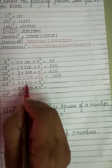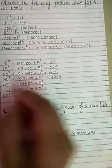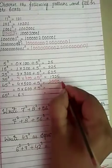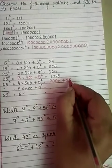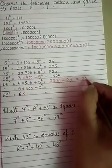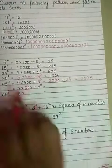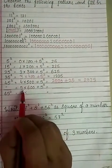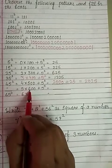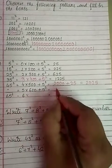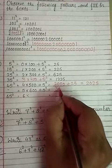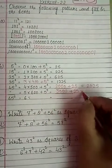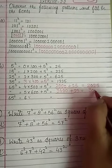45 square: 4 into 500 = 2000, plus 5 square 25 — answer is equal to 2025. It means 45 square is equal to 2025. Next, 55 square: 5 into 600 = 3000, plus 5 square 25 — answer is 3025.